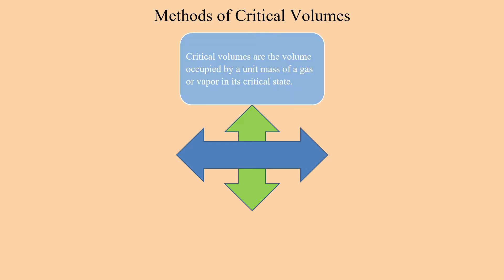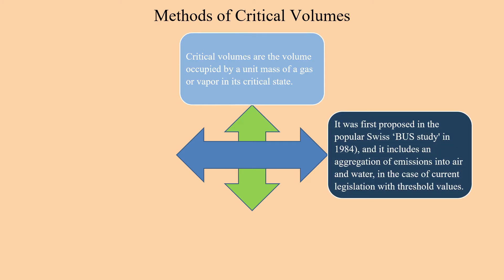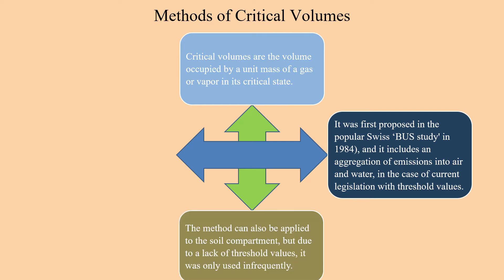Critical volumes are the volume occupied by a unit mass of a gas or vapor in its critical state. This method was first proposed in the Swiss bus study in 1984. It includes an aggregation of emissions into air and water. In the case of current legislation with threshold values, the method can also be applied to the soil compartment, but due to a lack of threshold values it was only used infrequently.